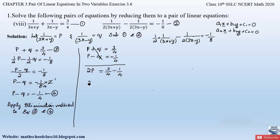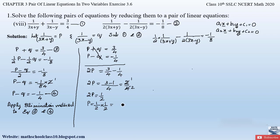Adding equations 3 and 4: the q terms cancel, and we get 2p = 3/4 − 1/4. Since the denominators are the same, 3 − 1 = 2, so 2p = 2/4 = 1/2. Sending 2 to the right-hand side: p = 1/2 × 1/2 = 1/4. Therefore p = 1/4.